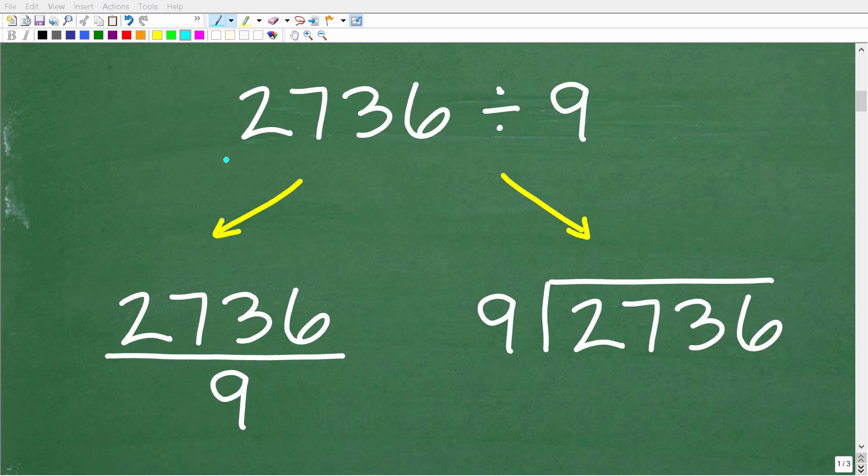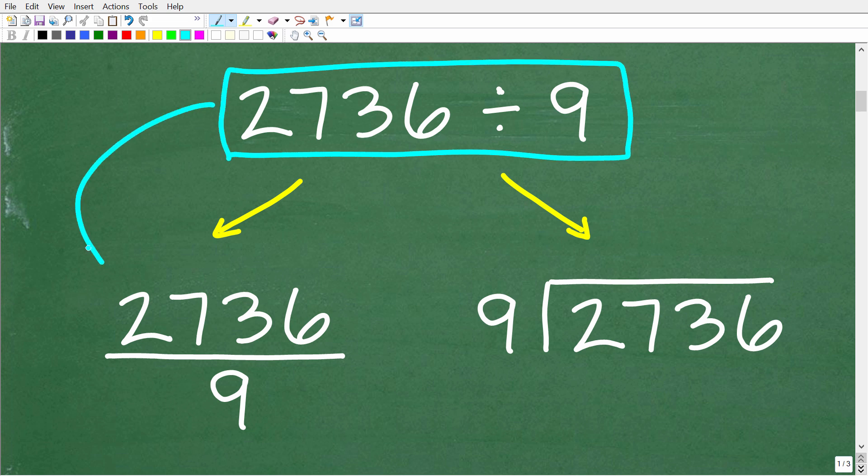All right, so let's take a look at the steps to do this basic division problem. The first step to solve this problem is to write it in a different way. One way you can think of this problem is as a fraction. So 2736 would be our numerator, and 9 would be our denominator. Remember, when you have a fraction, the fraction bar itself is the division operation. But this isn't really going to help us out to calculate the answer. So we're going to want to write this problem in this way right here. We have 2736 and we're going to divide it by 9.